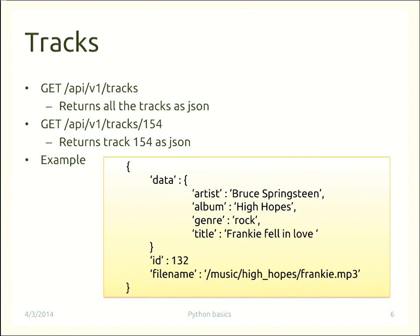If we perform a GET on the tracks resource, we receive back the list of songs. If we perform a GET on a single track, we receive just the entry for that specific track. What we need to define now is how the track is represented. Typically in REST, information is provided in JSON format — this is the most common choice, though services may also offer XML. Let's just stick to JSON to keep the server simpler.